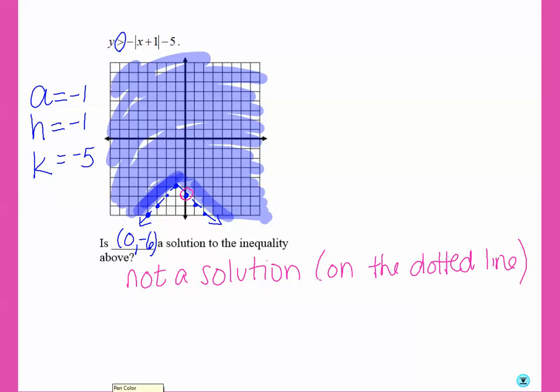So something that would be a solution would be anything in this shaded area. So let's say the point 3, 1.